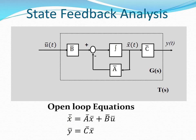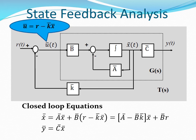In open loop, that is before we implement the state feedback, the state equations are X-dot equals AX plus BU and Y equals CX. We refer to these as the open loop equations. When we close the loop, we notice that U equals R minus KX. If we substitute for U into the open loop equations, we get the equation X-dot equals (A minus BK) times X plus BR, and Y equals CX. So here we have generated the closed loop equations for the system.